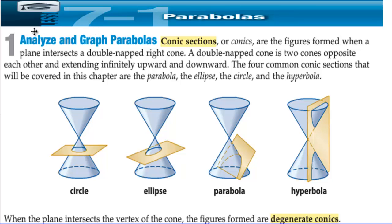7.1 Parabolas. Analyze and graph parabolas. Conic sections, or conics, are the figures formed when a plane intersects a double-napped right cone. A double-napped cone is two cones opposite each other and extending infinitely upward and downward.